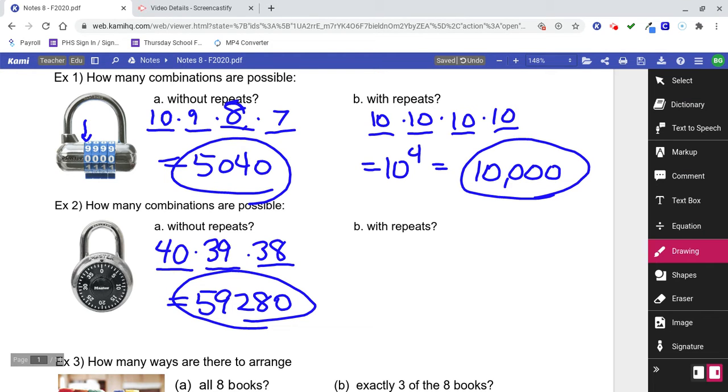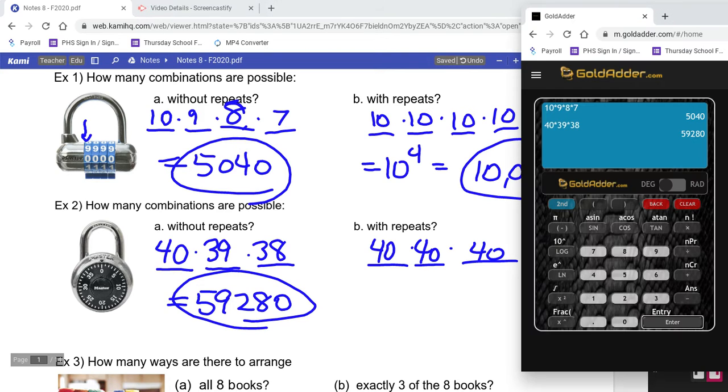Without repeats - that was without. Now with repeats, it's basically the same thing. You've got three blanks and you've got 40 choices for each of those three blanks. We have to think about sometimes in the question if we're allowed to repeat or not. So we can do 40 to the third power, which is 64,000.